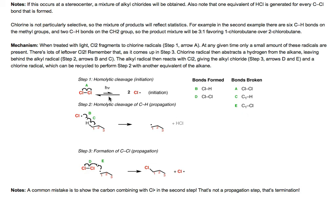This is called an initiation reaction because we're starting with zero free radicals and ending up with two — there's a net gain in the number of free radicals. That's our definition of an initiation reaction. Once we form these chlorine radicals, a chlorine radical can react with our alkane — in this case propane — taking a hydrogen from C1. We form a hydrogen-chlorine bond, break the carbon-hydrogen bond, and end up with a free radical on carbon one along with one equivalent of HCl.